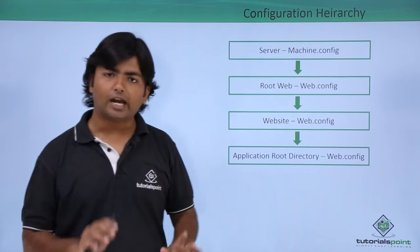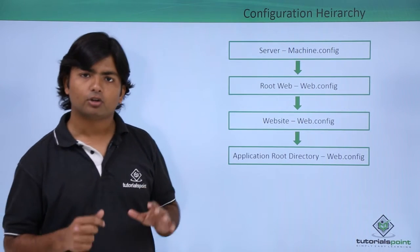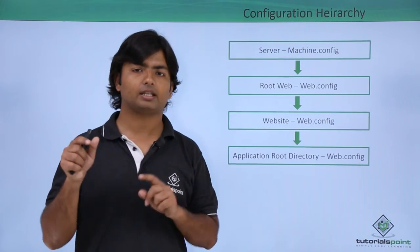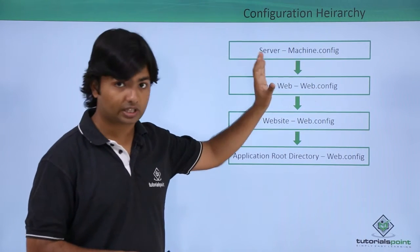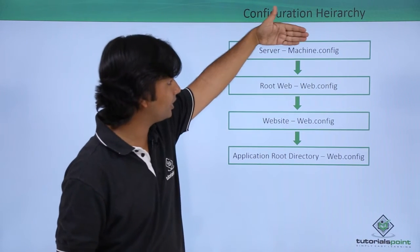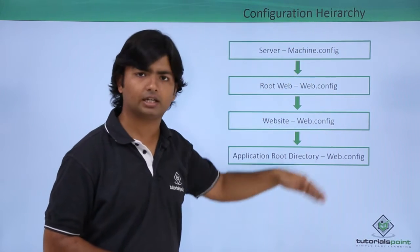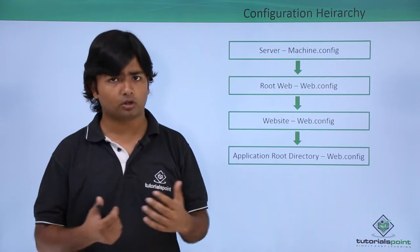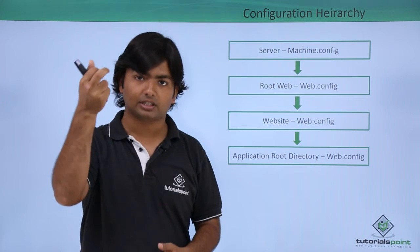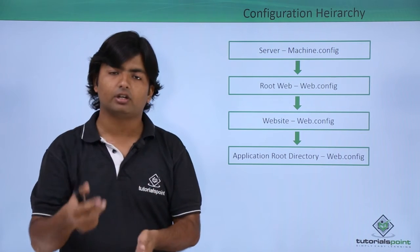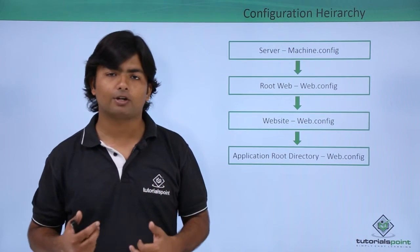First of all, on the server there is a machine.config, which contains all the configurations for the websites. If you want to make changes for your particular website on that server, you can create a web.config in the root of your folder. All default configurations are taken from machine.config, but whatever changes you have made in your web.config will take precedence — similar to inheritance in object-oriented programming, where changes in the derived class are preferred over the base class.